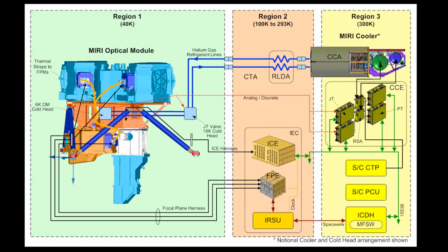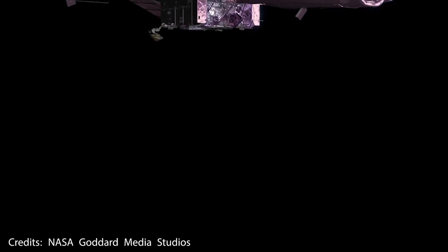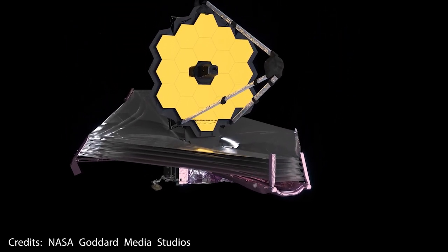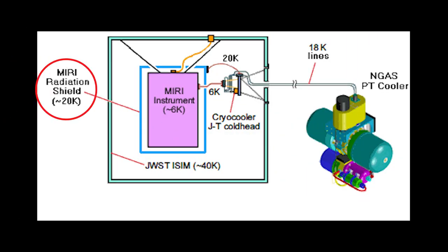And now to the question of why the different parts of the cryocooling system are separated in different regions. As you may have guessed, this has to do with the excess heat and vibrations that the compressor and the electronics generate. You want all these things as far away from the instrument as possible, so that's why these parts were placed behind the telescope's massive sunshield. Additionally, MIRI also features a thermal shield designed as the last barrier that protects it from excess heat and is critical to achieving the lower temperature needed.